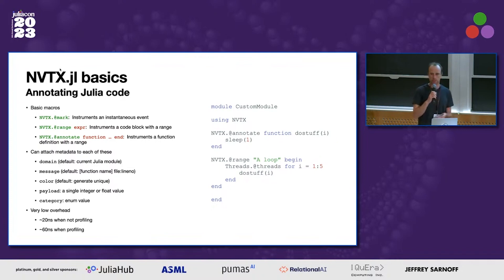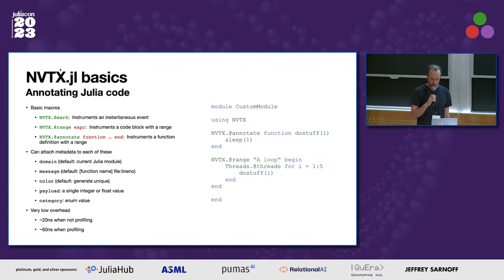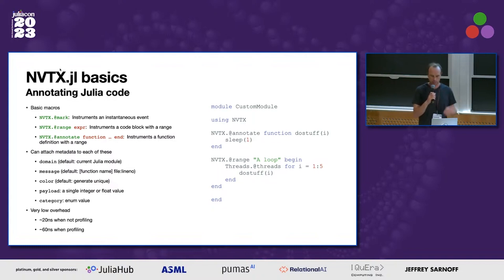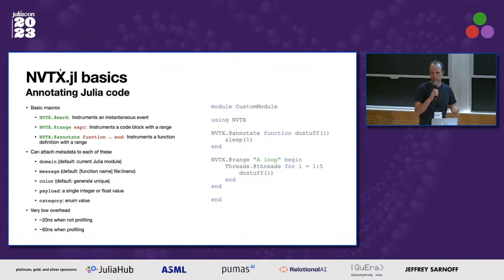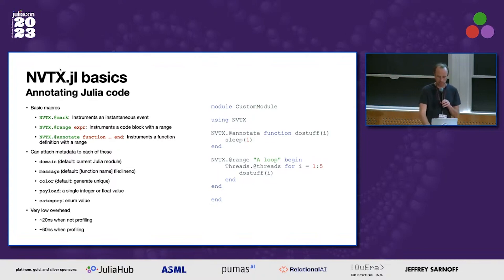You can generate a message, and because it uses macros we can automatically include the file and line number by default. You can give colors — we just generate a unique one for every annotation. And you can attach a small payload if you want to track other things. It tends to be fairly low overhead: about 20 nanoseconds when not using the profiler at all, and about 16 nanoseconds when profiling. So there's some overhead, but it's pretty low.